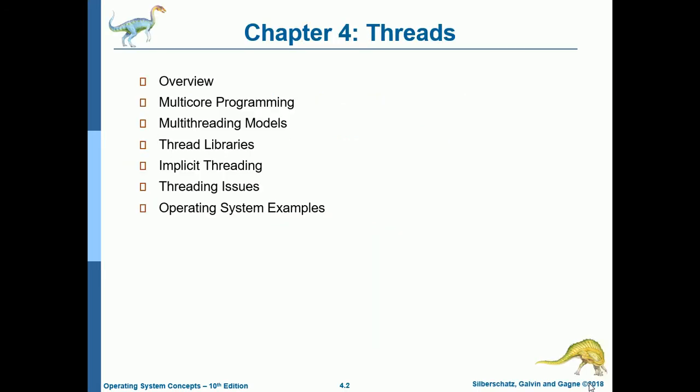The contents of Chapter 4 are: Overview, Multi-Core Programming, Multi-Threading Models, Thread Libraries, Implicit Threading, Threading Issues, and Operating System Examples.